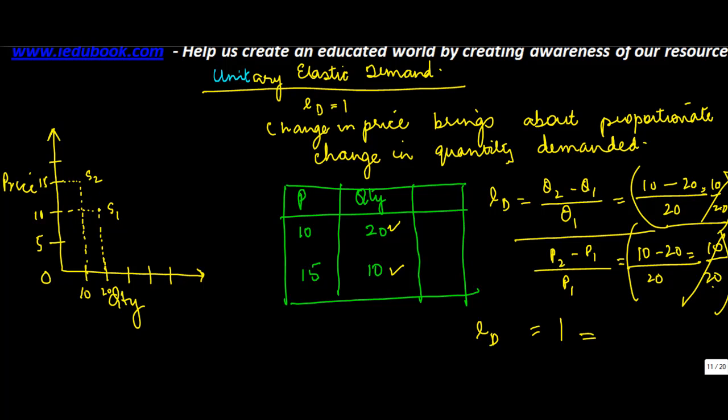If you join these two dots and extend them to the X and Y axis, this will be sloping downwards and sloping upwards. These angles in case of perfectly elastic demand are equal to 45 degrees.